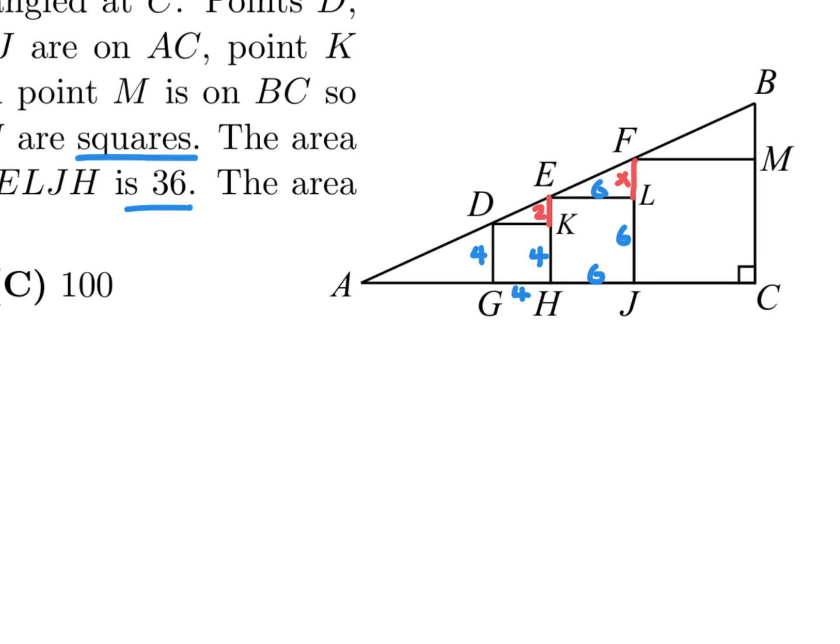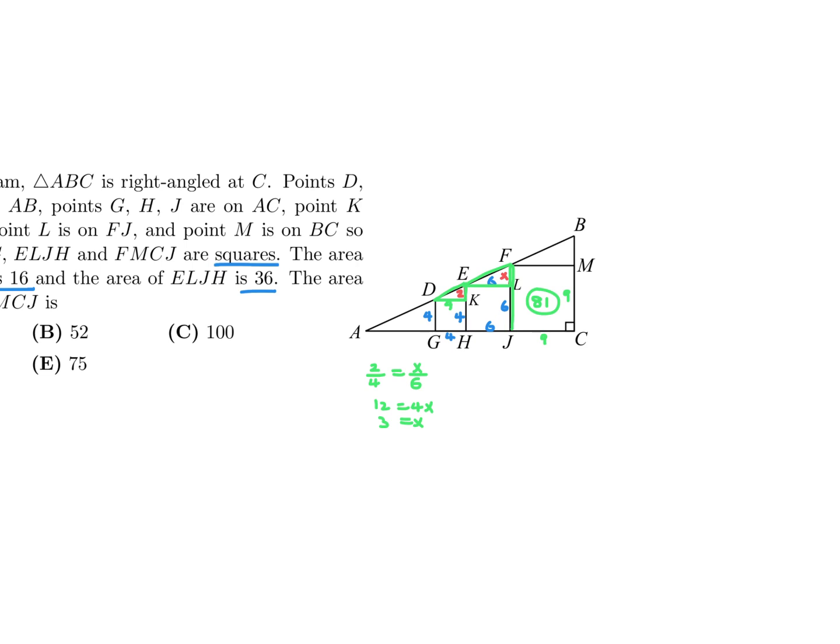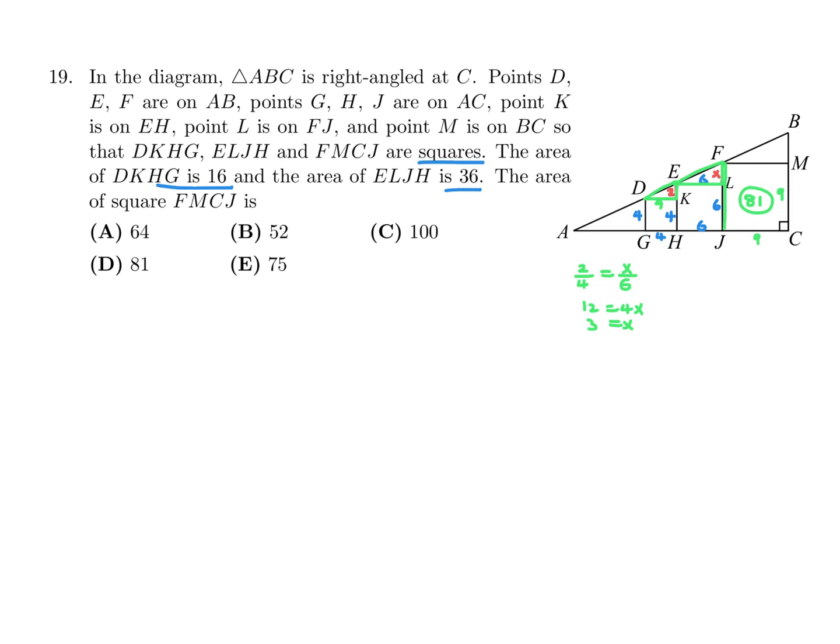So this side is what I'm going to be concentrating on. I'm going to call it X. And these are similar triangles. These ones, this one and that one, those are similar triangles. So that means that 2 over 4 is the same as X over 6. And that means 12 is equal to 4X, and therefore X is equal to 3. So if X equals 3, then that whole side would be 3 plus 6, which is 9, and therefore that would be a 9 by 9 square, and therefore the area would be 81. And 81 is the answer to that question, and that would be choice D.